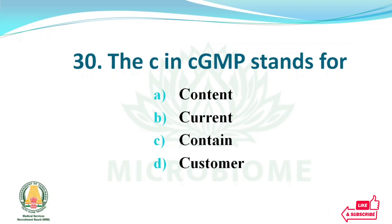The C in CGMP stands for — options: content, current, contained, customer. The right answer: option B, current.